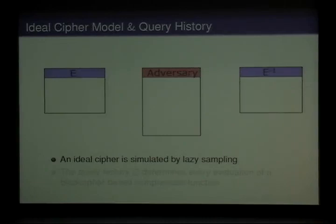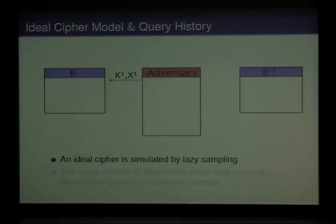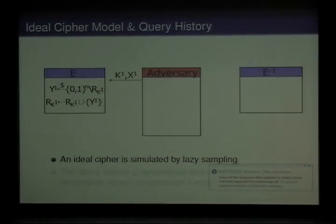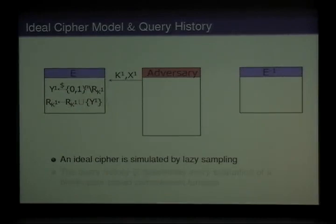In this model, an adversary is allowed two types of oracle query: an encryption query and a decryption query. Each oracle is usually simulated by lazy sampling. The first query is an encryption query with a key K1 and a plaintext X1, and this type of query is also called a forward query. Once the oracle receives this query, its response is chosen uniformly at random from the set of n-bit strings. Each key is associated with its range and domain, which are all initialized as empty sets. Once this value is sampled, it is added to the range, so later the same point is not sampled again, because each key has to define a distinct permutation in a block cipher.